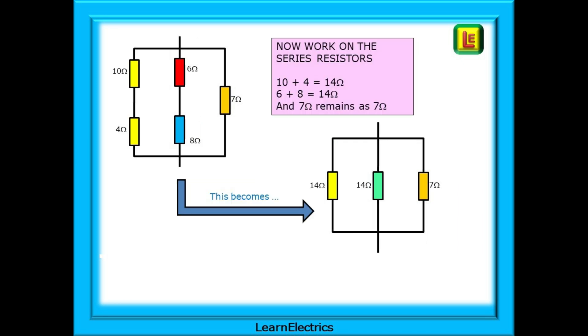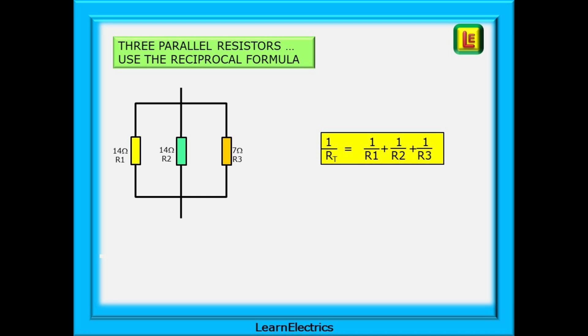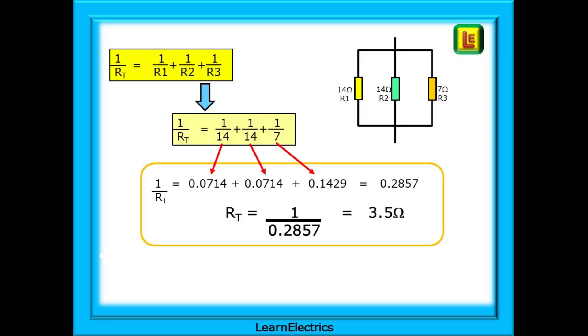Now we can work on the series resistances. Starting on the left 10 plus 4 is 14 ohms. In the centre 6 plus 8 is also 14 ohms and that leaves the single 7 ohm resistor on the right. We now have three parallel resistors and we can use the reciprocal formula. 1 over RT equals 1 over R1 plus 1 over R2 plus 1 over R3. That gives us 1 over 14 plus 1 over 14 plus 1 over 7. Add these three together and we have 0.2857.